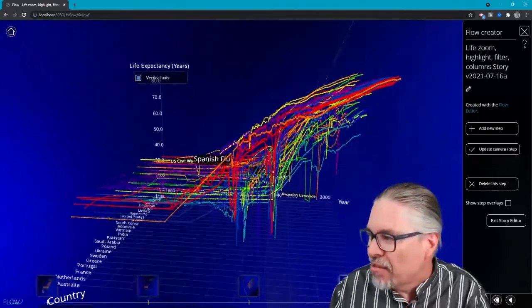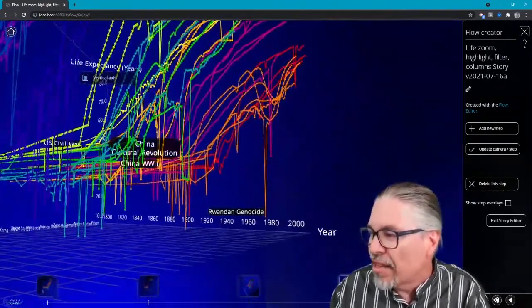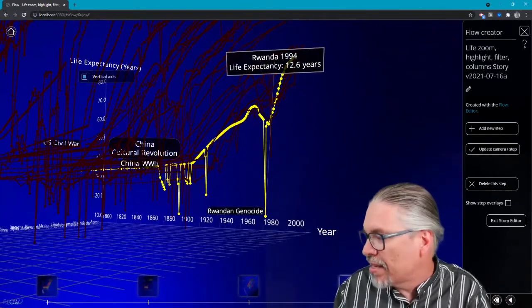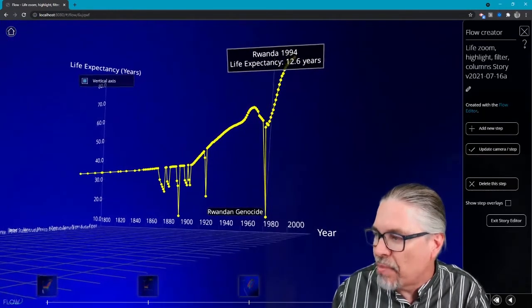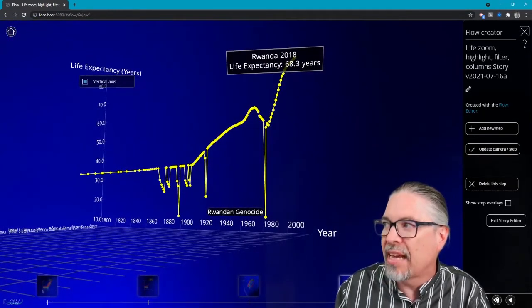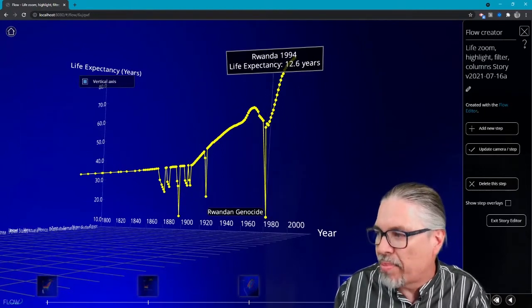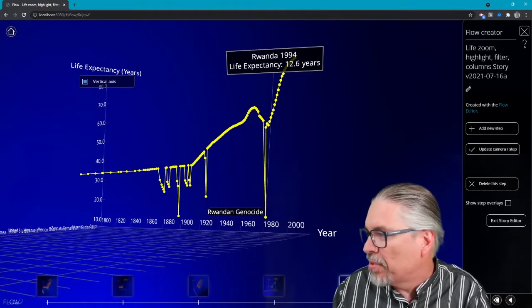But then we also want to explore all the stories within it. So we can go in here and maybe highlight the Rwandan genocide. In fact, I can even show just the country of Rwanda through time. And we can see that what happened in 1994 with the Rwandan genocide, the huge drop in life expectancy. Maybe we'll call that a step.